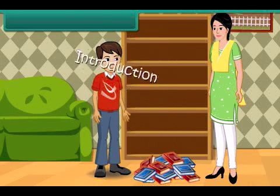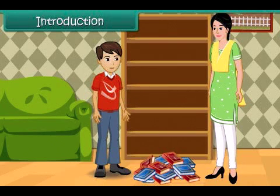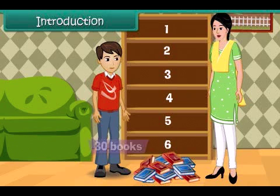Introduction. Look at this bookshelf. There are six sections in the bookshelf. Ram's mother asked him to arrange 30 books in the shelf with each section containing equal number of books.